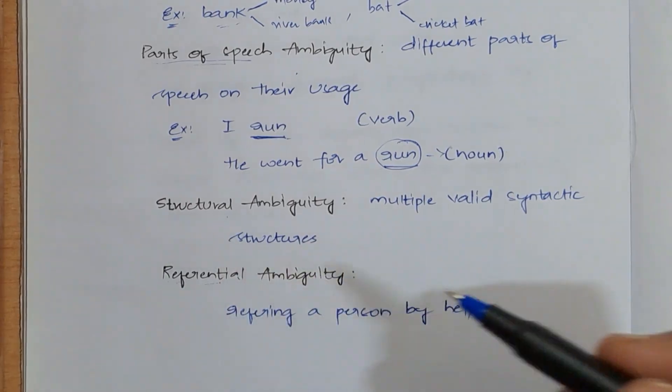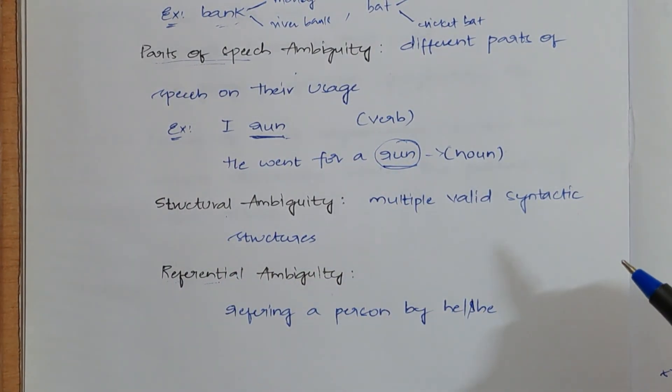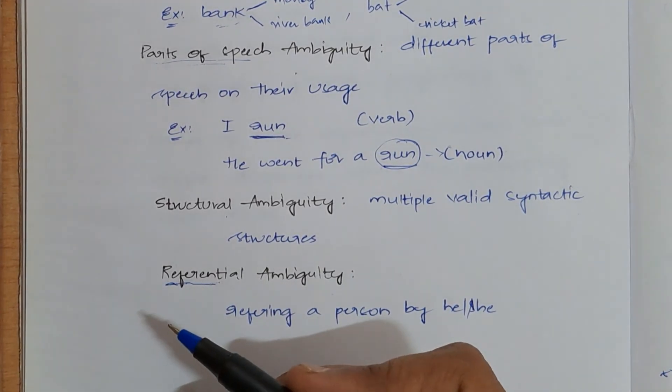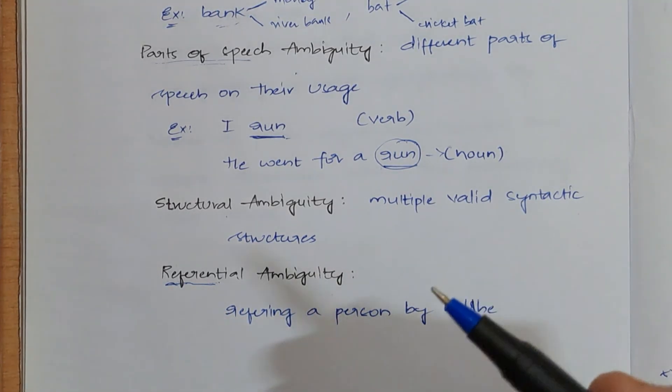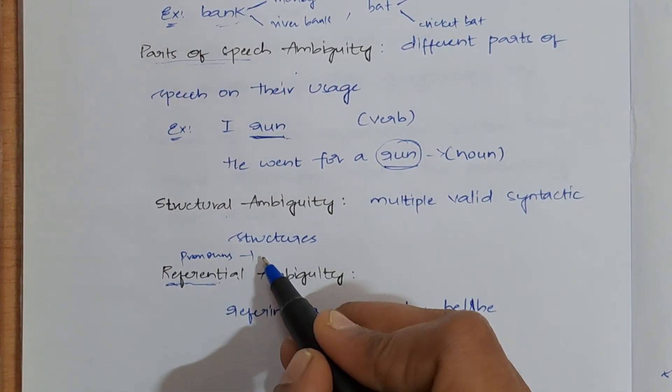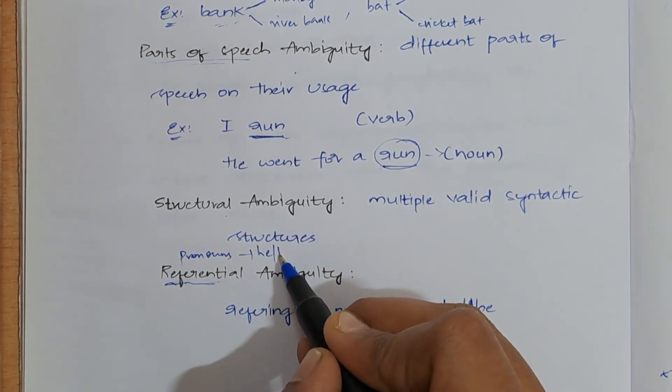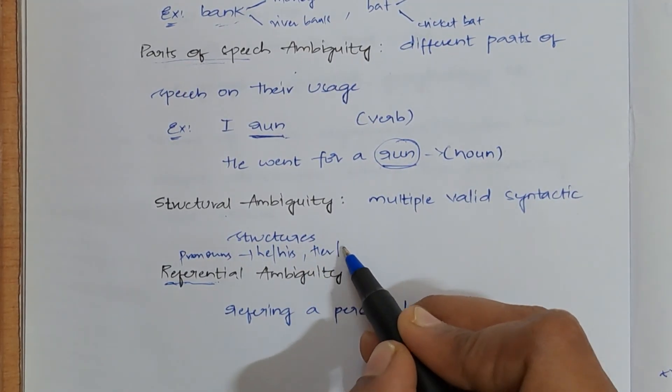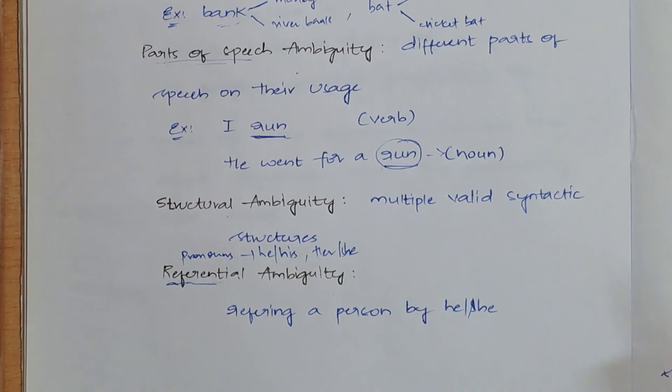Structural ambiguity is - if you take some particular sentence, you can't be writing that sentence in one way, right? You can write in multiple ways which is portraying the same meaning for that. And then we will be having referential ambiguity. Reference is nothing but instead of referring a person by his name every time, you can actually refer him with pronouns. What are these pronouns? When it comes to a male, you can use he or his. And when it comes to a female, you can use her or she.